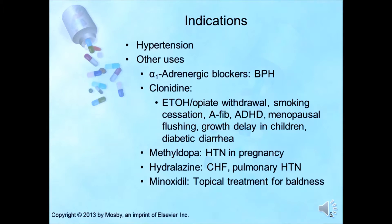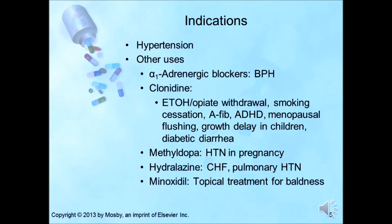Methyldopa is another antihypertensive medication, and its unlabeled use is for hypertension in pregnancy. Hydralazine is also used to control high blood pressure; it has also been found useful in treating congestive heart failure as well as pulmonary hypertension. And minoxidil, an antihypertensive medication, has also been found to be effective against baldness — it is a topical treatment for baldness.